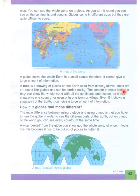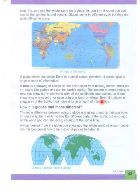The content of a map varies — a map can show the whole world with all the countries and oceans, or it can show only one country, or even only one town or a village. Maps جو ہوتے ہیں مختلف قسموں کے ہوتے ہیں — ایک پوری world کا map ہوتا ہے، کبھی ایک country کا map، کبھی ایک city کا یا ایک village کا بھی map ہوتا ہے۔ Even if it shows a small part of the earth, it can give a large amount of information.